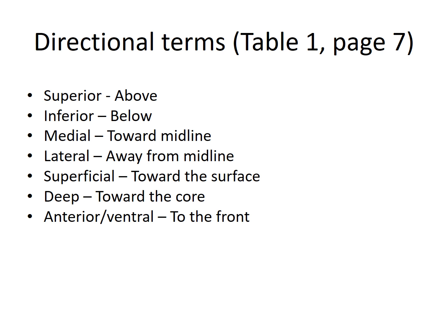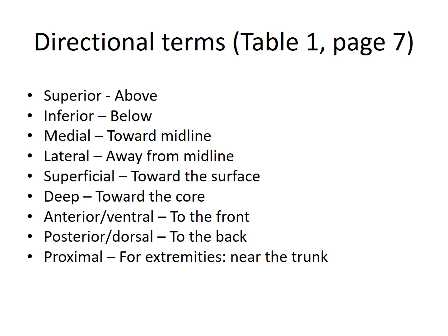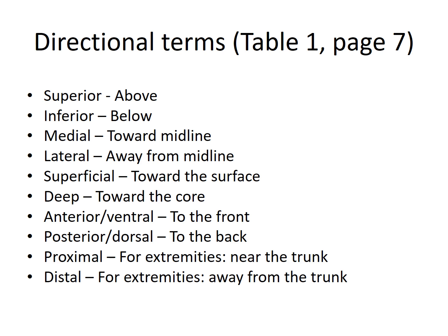Anterior, or ventral, means towards the front — we'll use anterior more often since ventral refers to animals, and this is a human anatomy lab. Posterior means towards the back; again, dorsal is used for animals so we'll stick with posterior. Proximal is used for extremities and means near the trunk; distal means away from the trunk. For example, our fingers are distal to our shoulder, and our shoulder is proximal to our fingers because the shoulder is closer to the trunk.